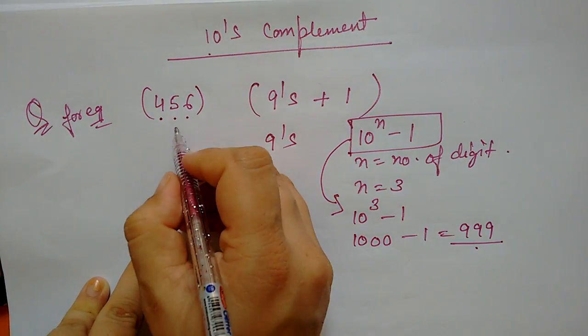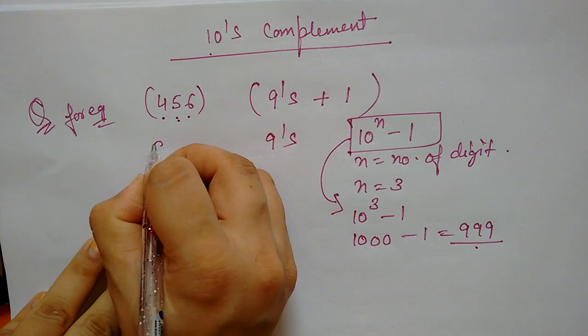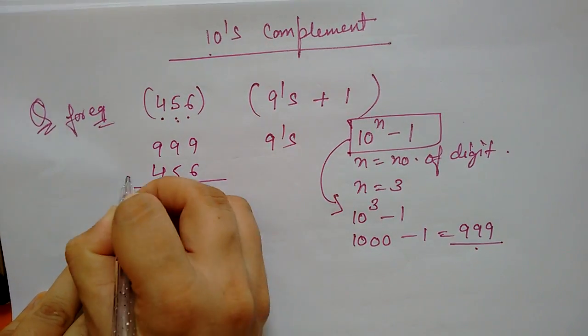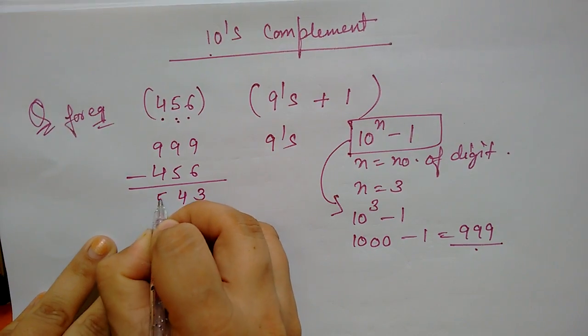Now, what do you want to do with this number? To subtract this number. 999 subtract 4, 5, 6. So, what will come? 3, 4, 5.